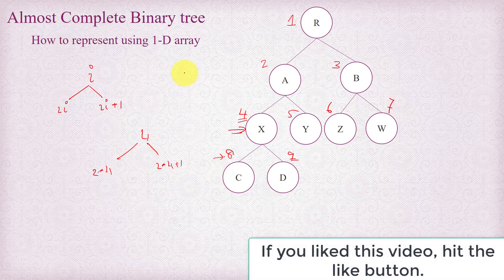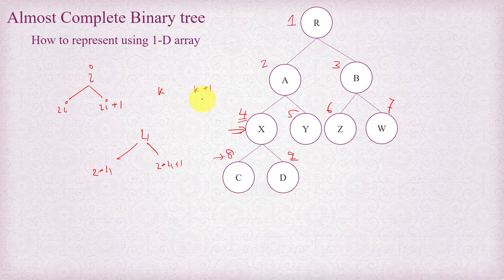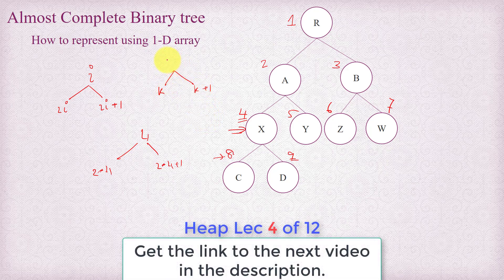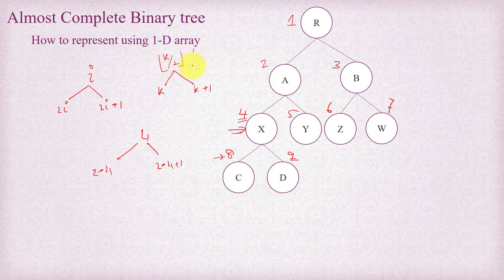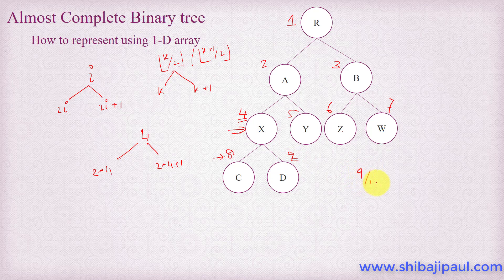We can find the parent as well. For any node with number k, you can find its sibling at k plus 1. If k is the left child then k plus 1 is the right child, and we can find the parent at k divided by 2. We take the floor value, or by k plus 1 divided by 2. For node 9, 9 divided by 2 is 4.5 but taking the floor value gives 4. So for any node with number k, we find its parent by dividing by 2 and taking the floor value.